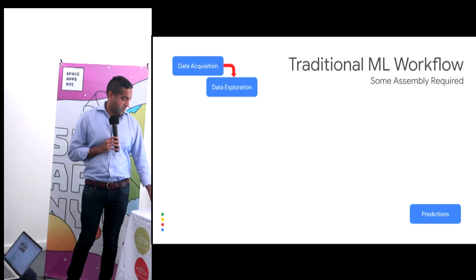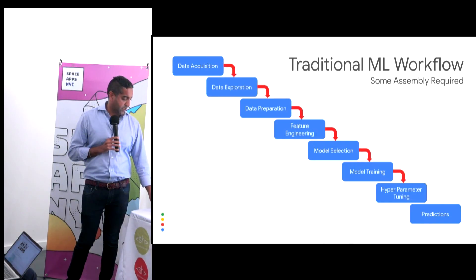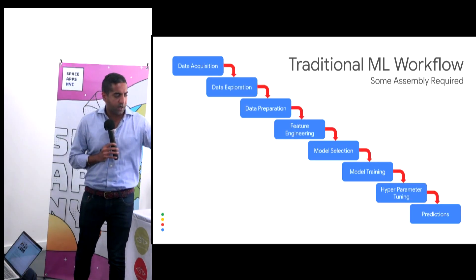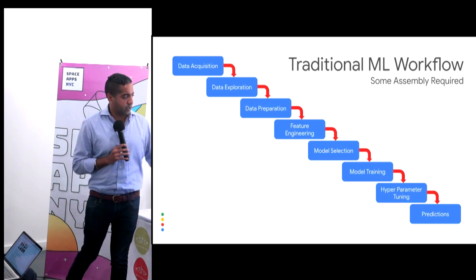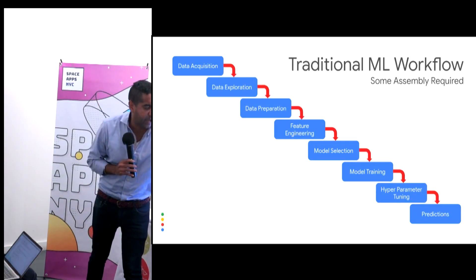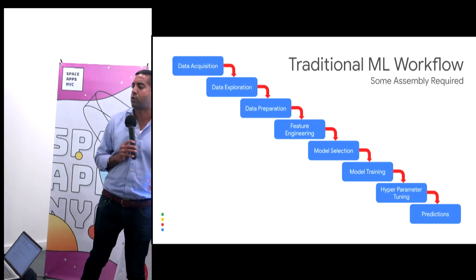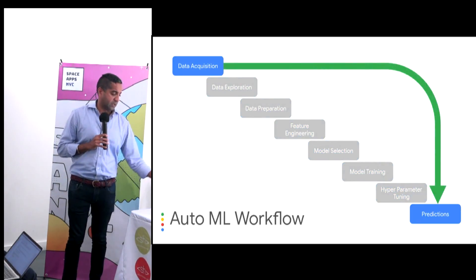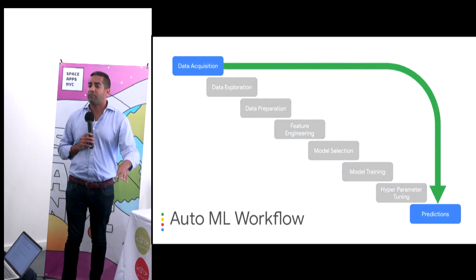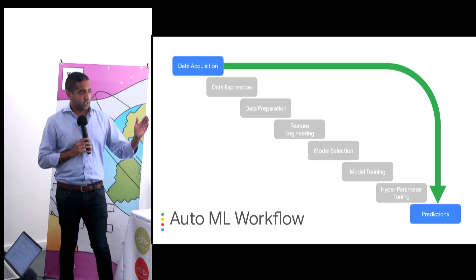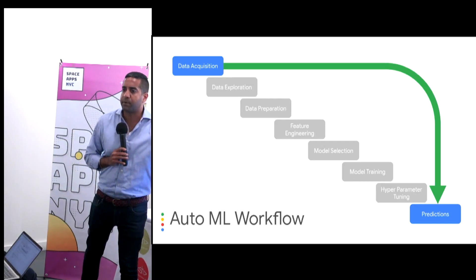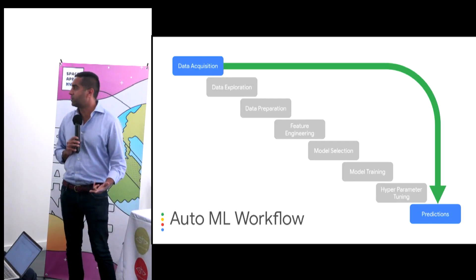Traditional machine learning has historically required a lot of assembly — you get the data, do all this work, and then it makes some sort of prediction. Everything we've done is basically remove that for you: just take what comes in and it'll spit out something you can do something really cool with.